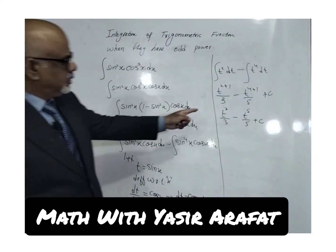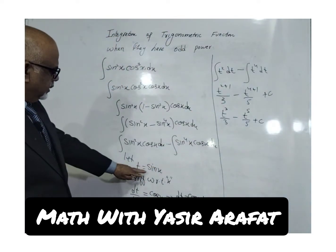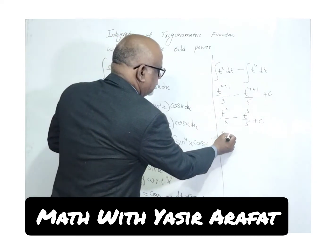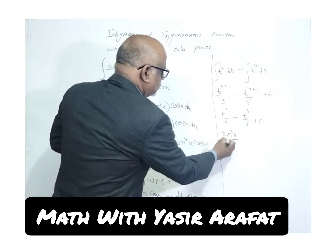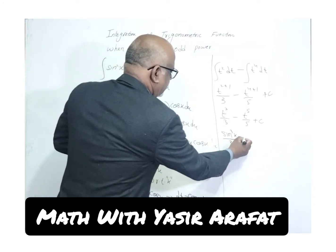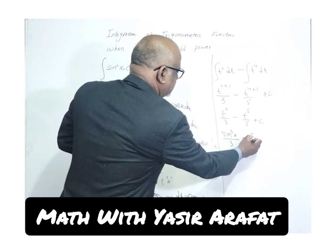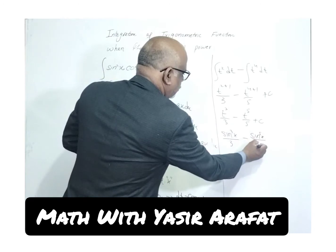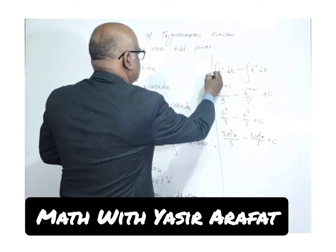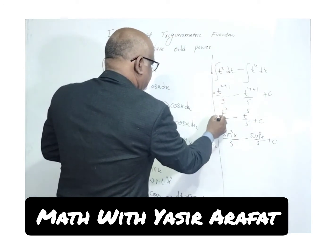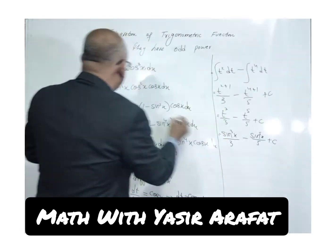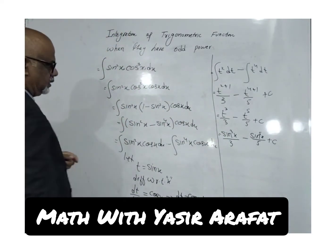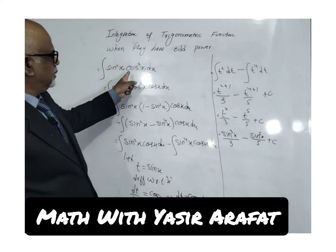Now we substitute back t = sin x. So the final answer is: sin³x/3 - sin⁵x/5 + c. This is the answer to this question.